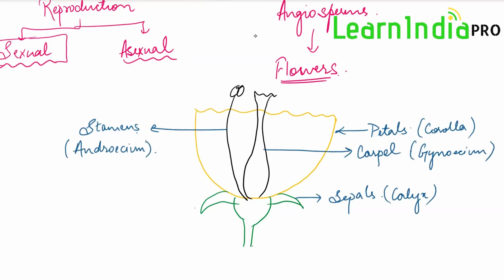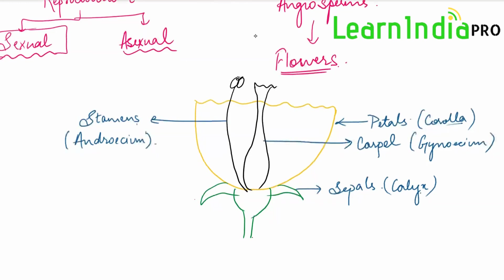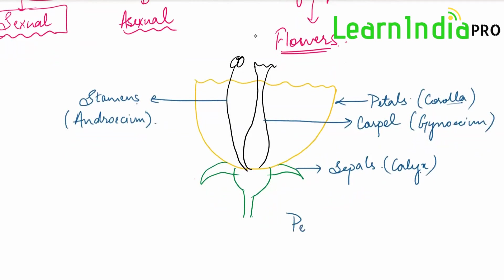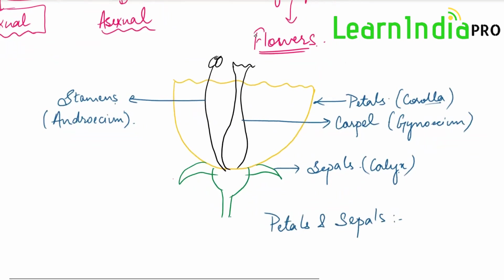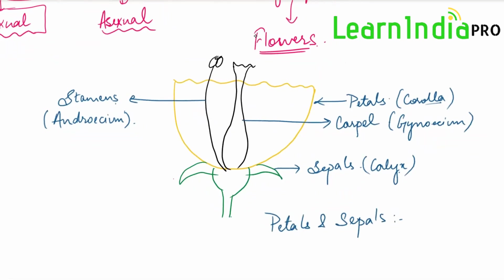So the flower has petals, sepals, carpel, and stamens. The complete set of petals is the corolla, sepals is the calyx, stamens is the androecium, and carpel is the gynoecium. Now, out of these four parts, petals and sepals are not directly involved in reproduction — they just help in reproduction. They have a supportive role, so they are called non-essential organs or accessory organs.